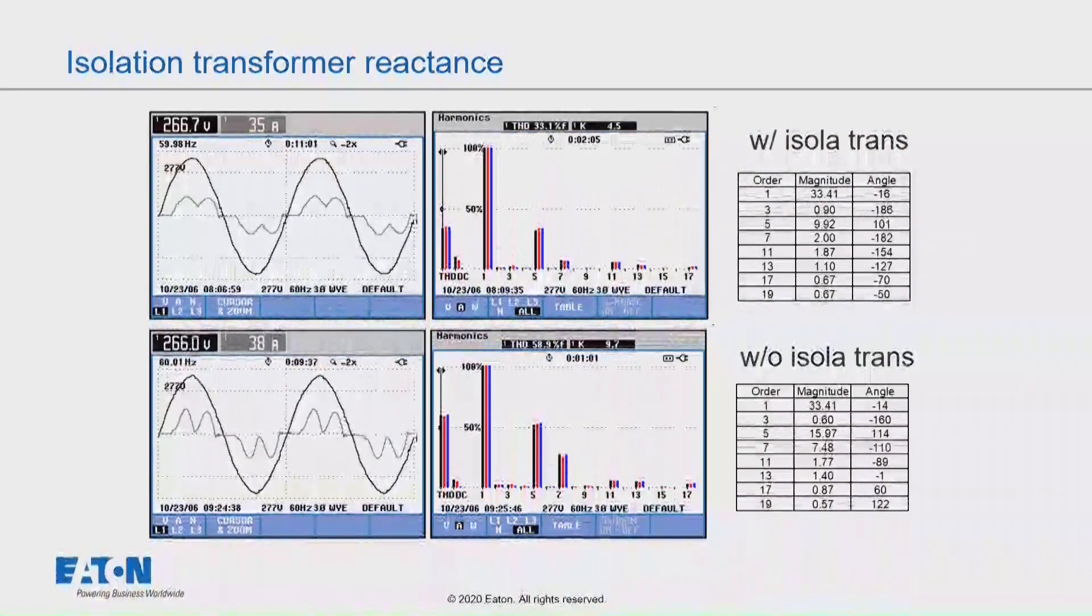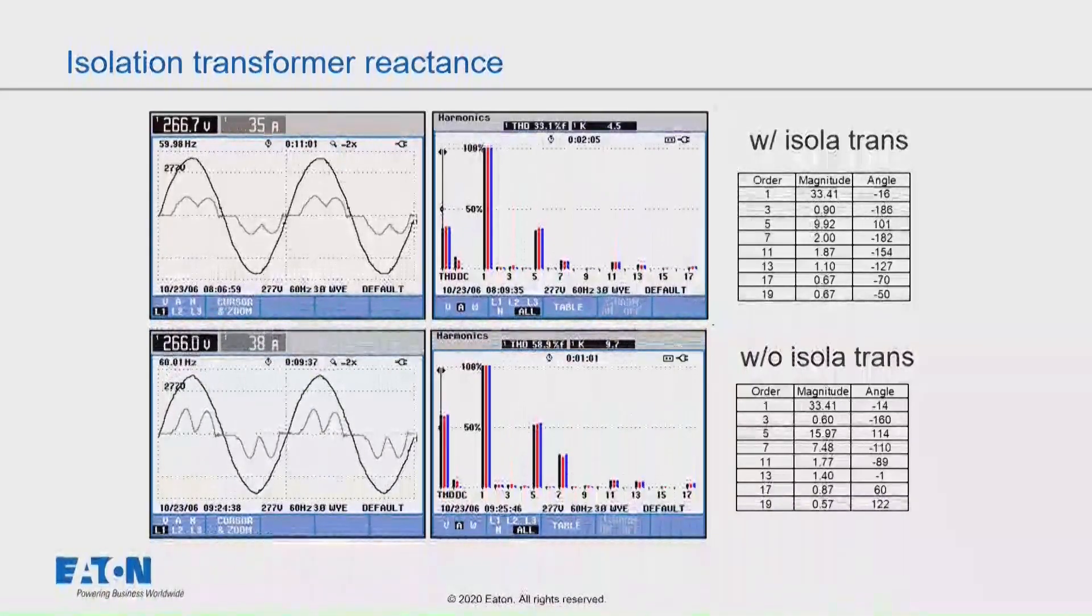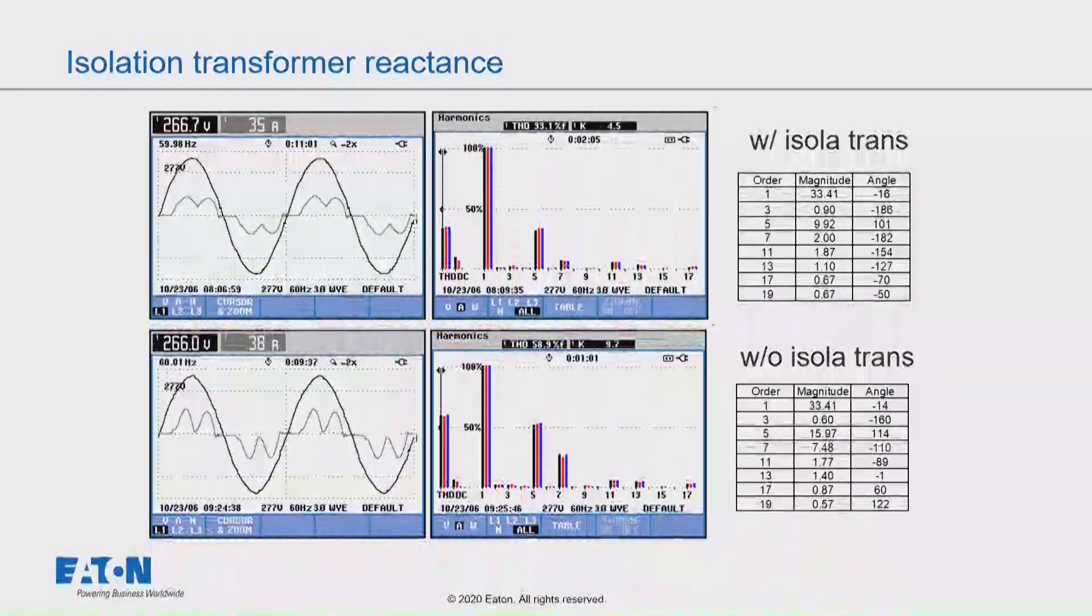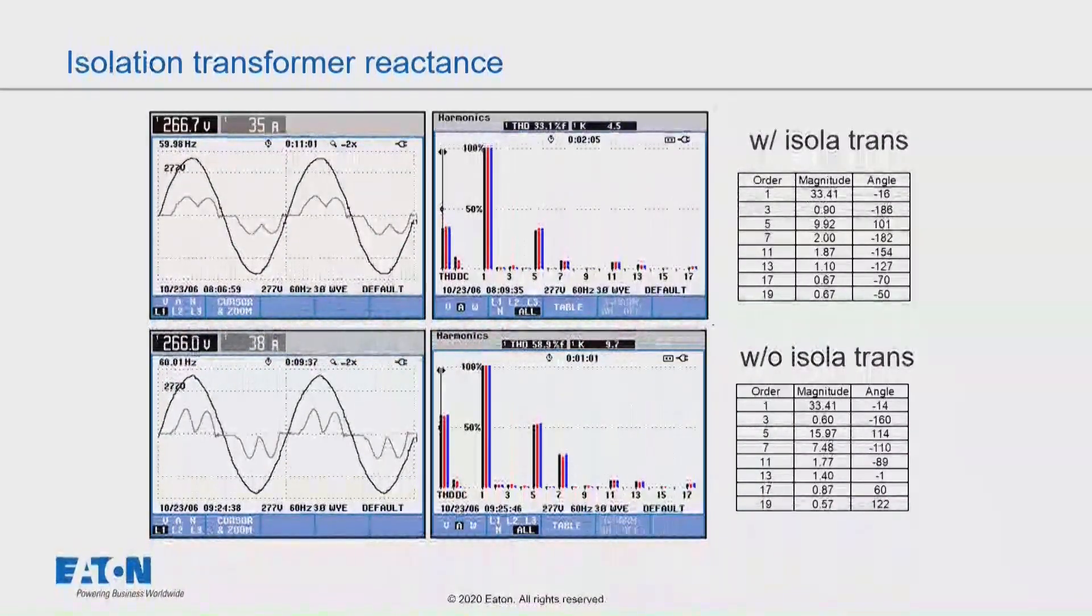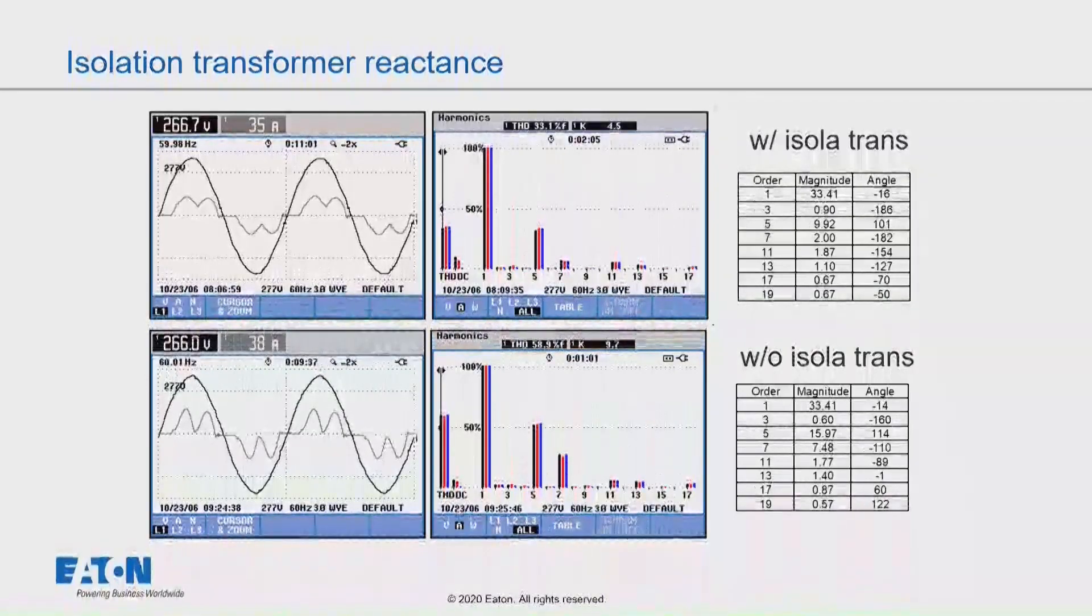Now if I had a transformer in front of my drive, what would that do? Well, the transformer impedance, a typical impedance on a transformer might be 5% or 6% impedance. That impedance acts like a line reactor does in front of the drive. So it constricts the flow of the harmonic current.